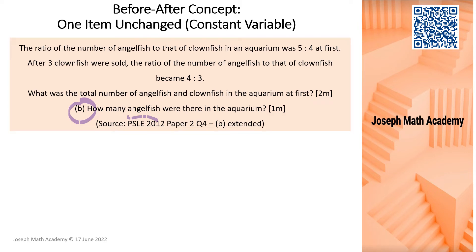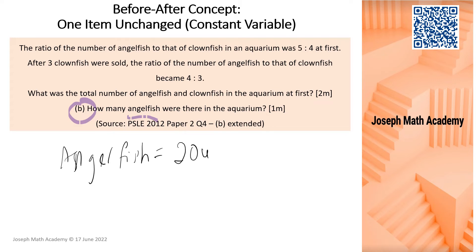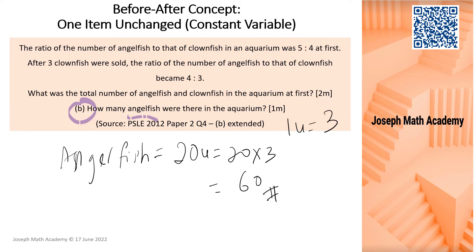If you remember, the number of angelfish is the constant variable — the item that is unchanged. So whether it is before or after, it doesn't matter. From our before and after ratios, angelfish is 20 units both before and after. Since 1 unit equals 3, 20 units equals 20 times 3, which gives us 60. So Part B is found.